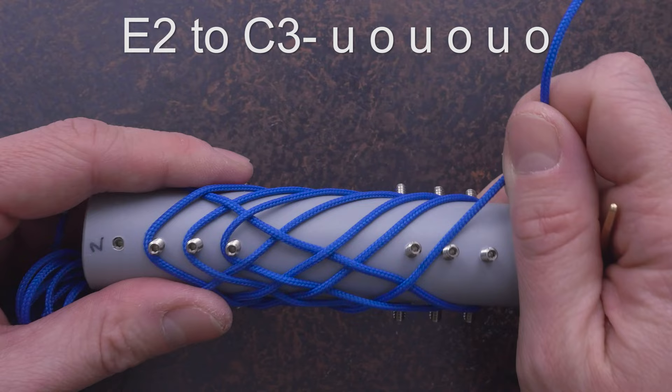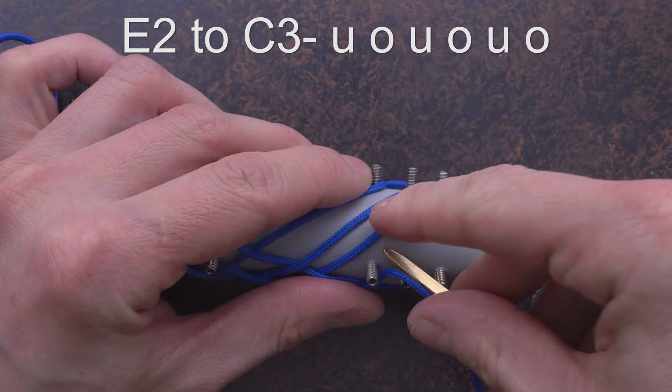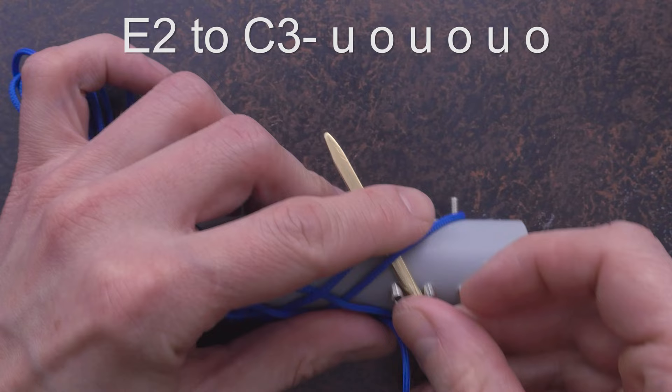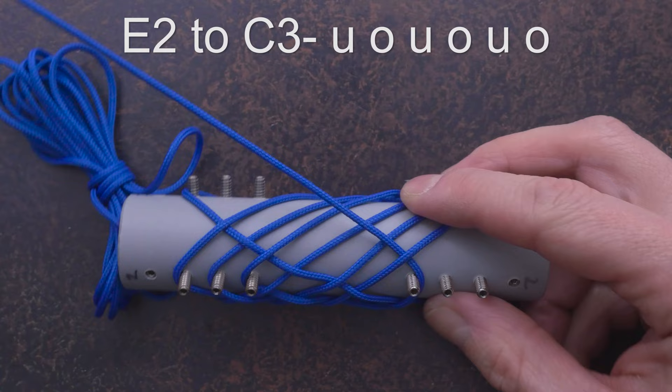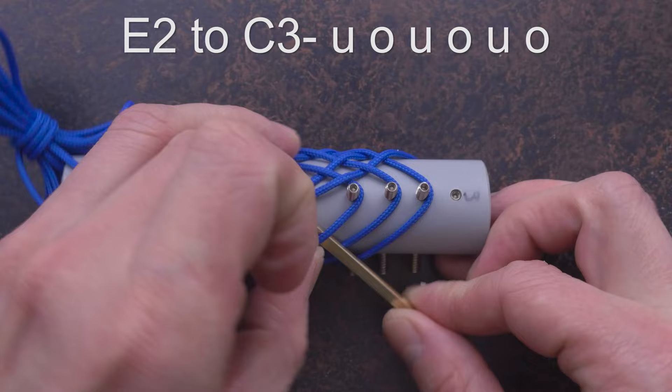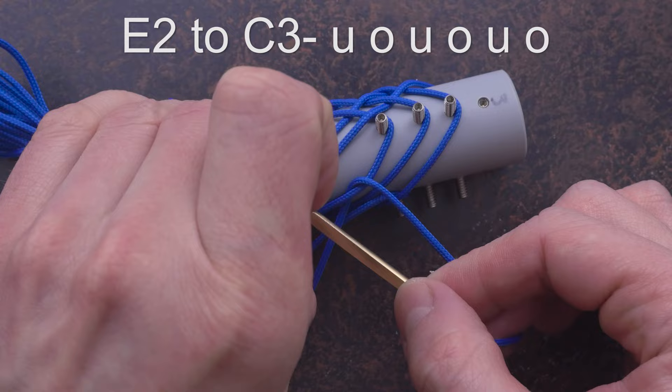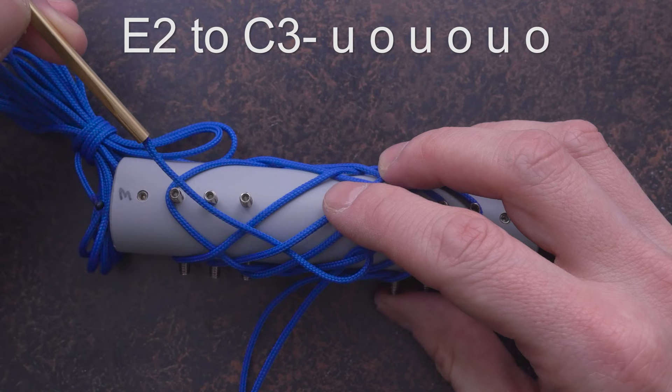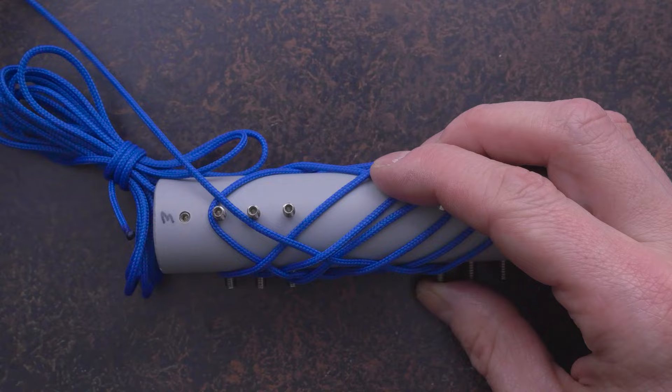From E2, we move to C3, starting under, then over, under over, under over, under, over, reaching C3.